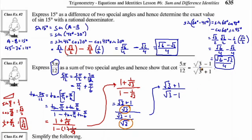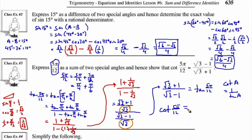We're almost there. This is the tangent of π/4 plus π/6, or in other words, tan of 5π/12. Now, cotangent of an angle is 1 over the tangent of that angle. So cotangent of 5π/12 is the reciprocal of tan of 5π/12, which gives us root 3 minus 1 over root 3 plus 1. And that's exactly what we were asked to show.